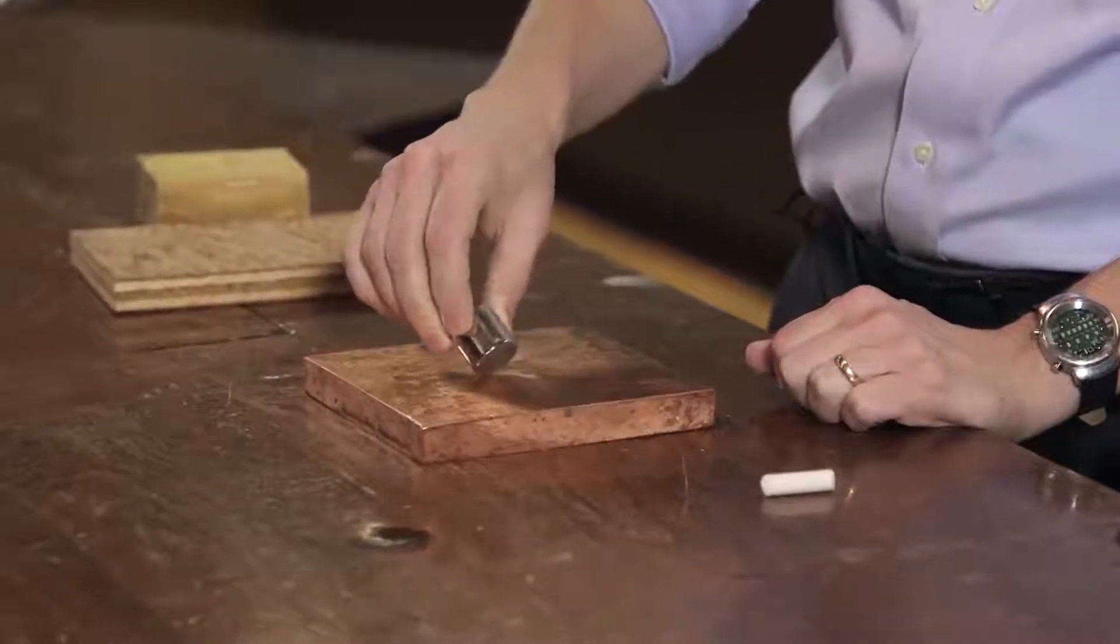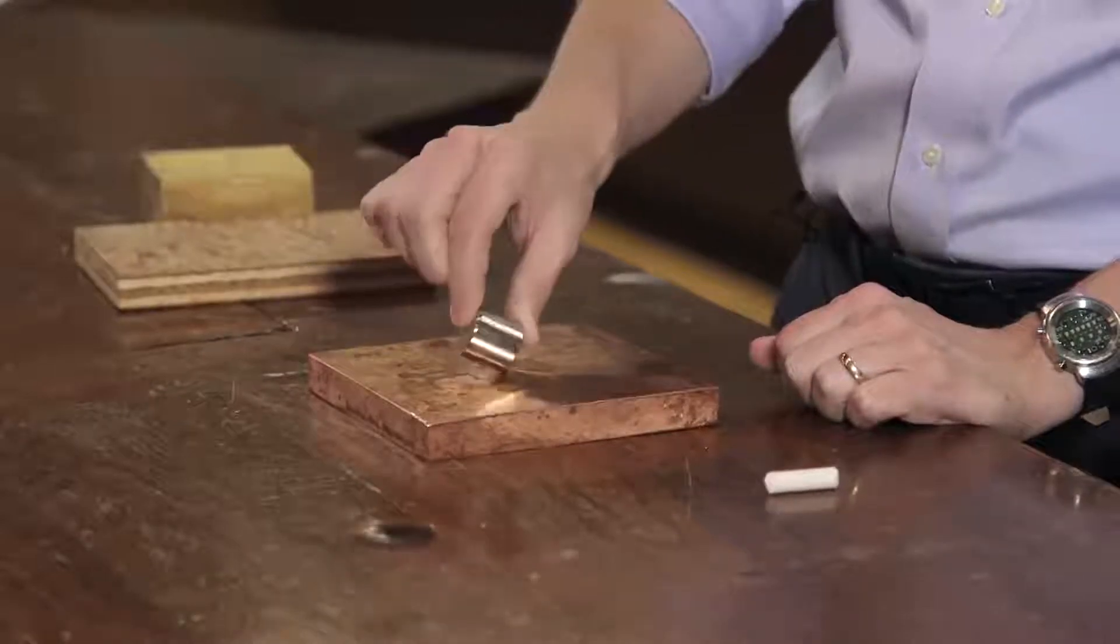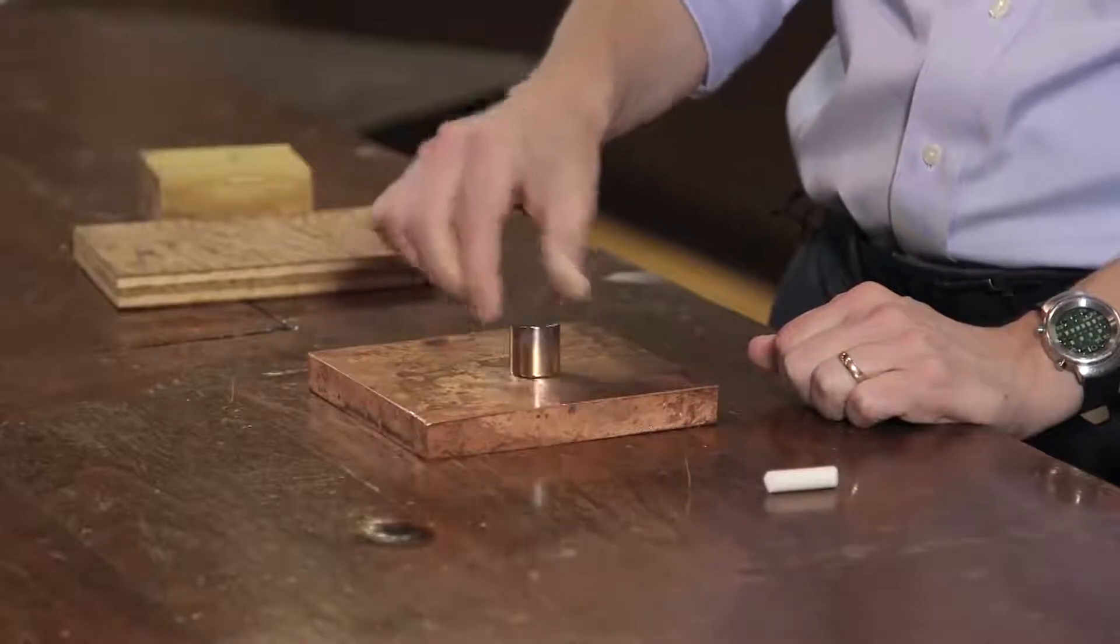You can kind of see it if you hold it on the corner and let it fall. It looks like it falls quite a bit slower than it should. That's the eddy currents always opposing and damping the motion.